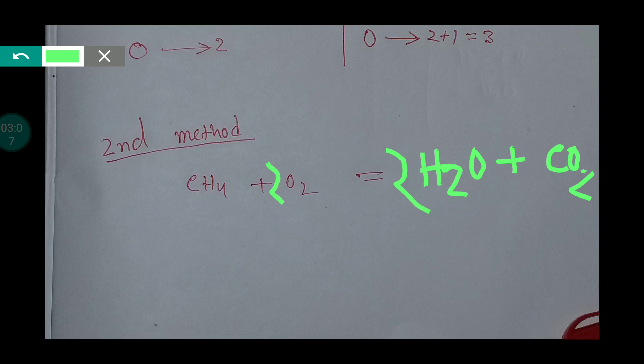That is why you have to place a two before O₂ as well. This is very simple logic — if you try, you will be able to do it. This is the balanced reaction. Thank you for viewing this video. Be well.